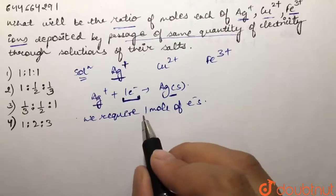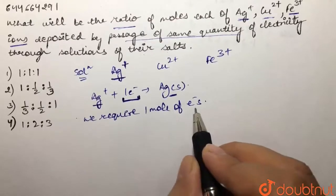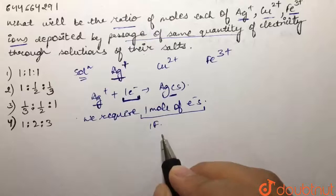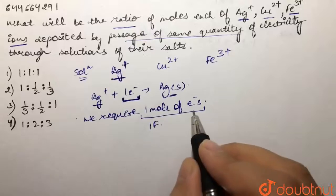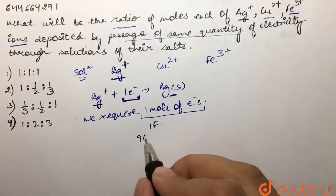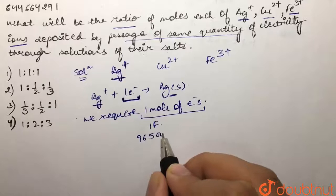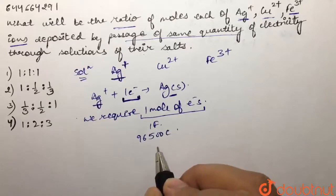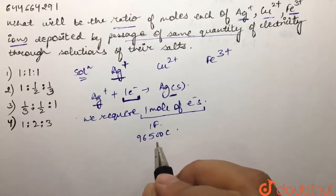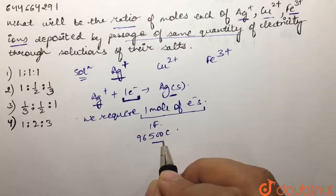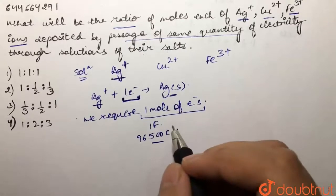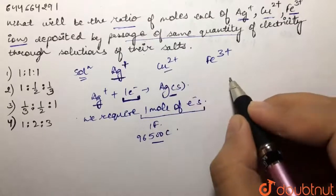This one mole of electrons is one Faraday of electricity, because one mole of electrons has one Faraday charge, or 96500 coulombs of charge. So one Faraday of electricity is required for the deposition of one mole of solid silver.